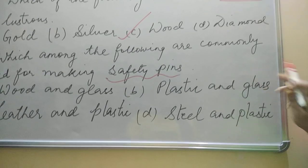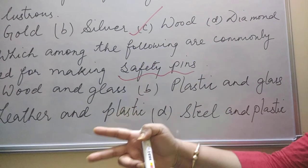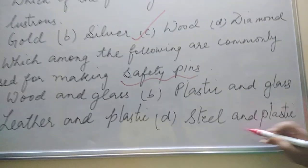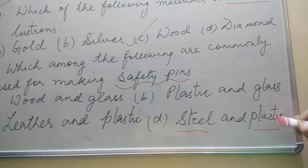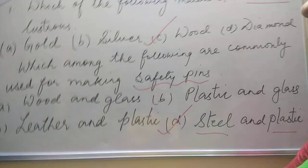Rather you can make it with plastic, but cannot with leather. Rather you can make it with plastic, but cannot with glass. So you have to find the pair in which both you can make the safety pin. Your answer will be steel and plastic. So correct option is the D one.